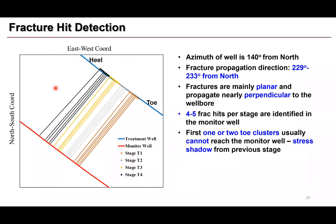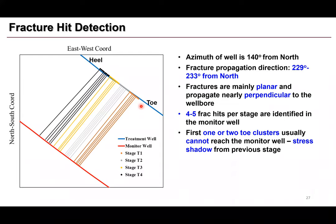We repeat this process for all four stages. From the frac report we get perforation locations for all stages and identify fracture hit locations on the monitor well. Connecting each fracture hit pair, the fracture propagation direction is almost normal to the wellbore — fractures are planar and normal to the horizontal wellbore. For these four stages, we find four to five fracture hits per stage out of eight clusters. One or two toe-side clusters usually cannot reach the monitor well, possibly due to stress shadow from the previous stage.